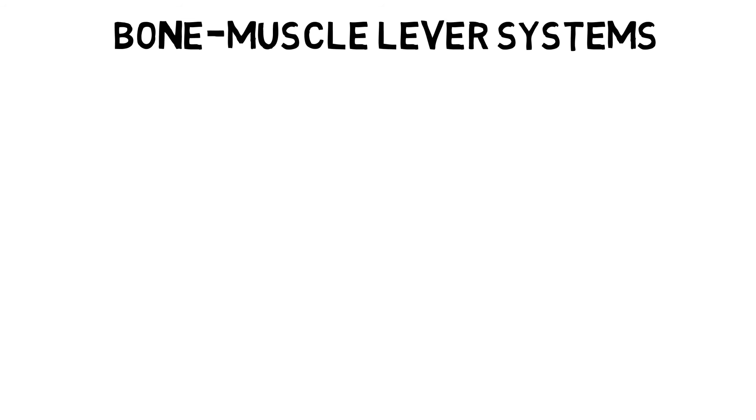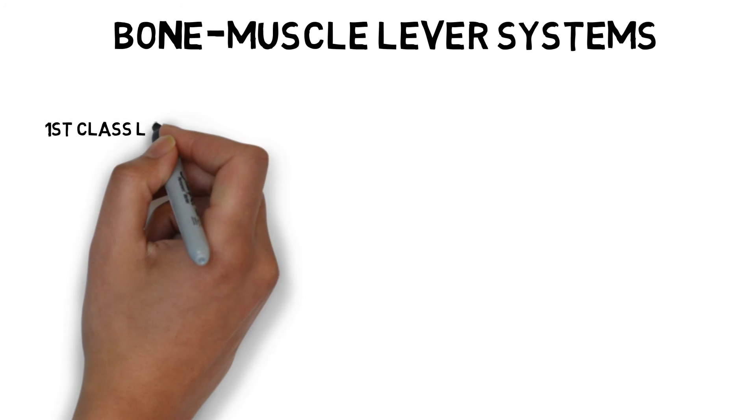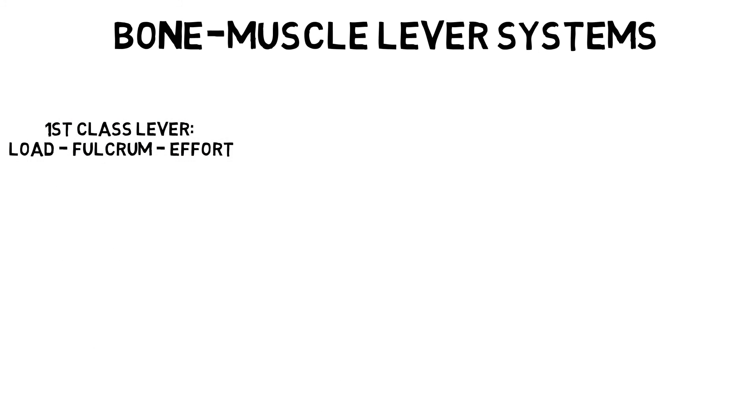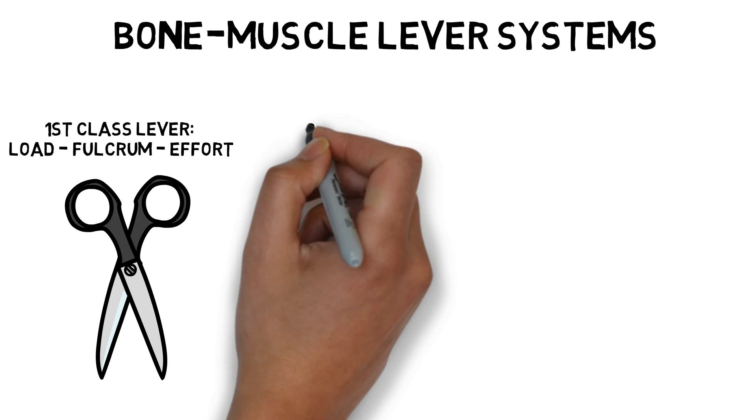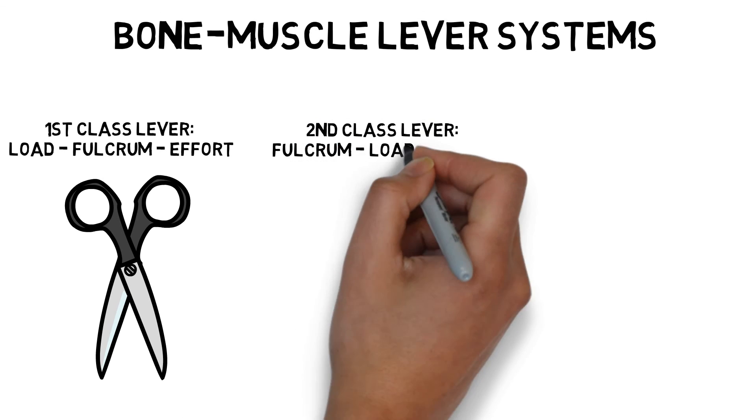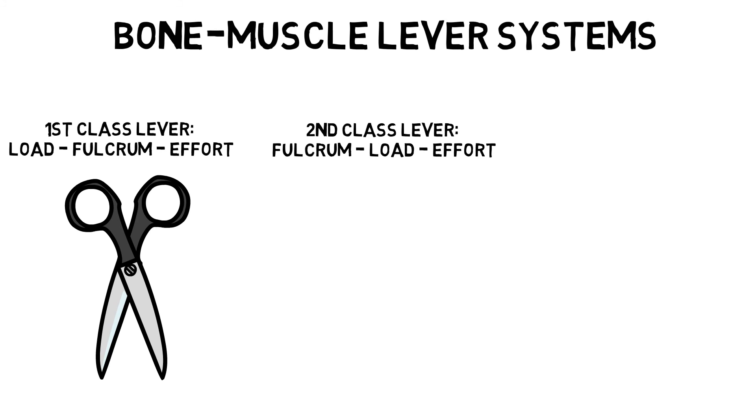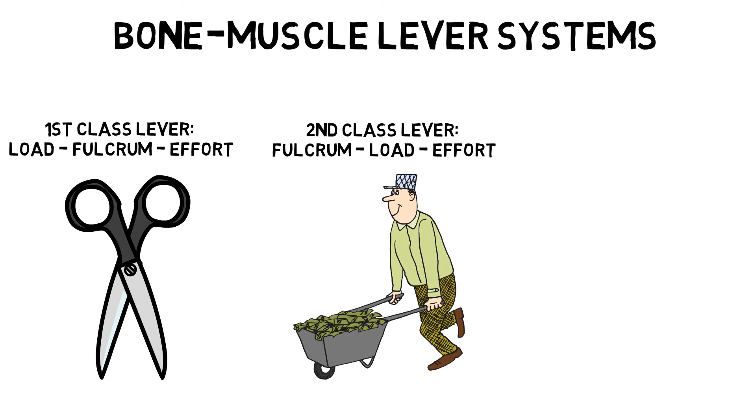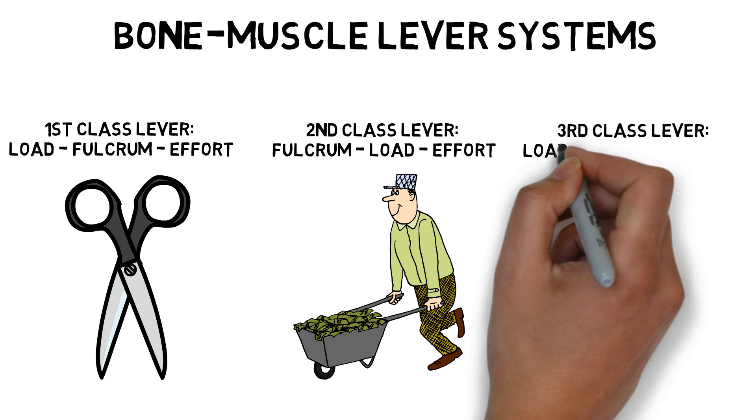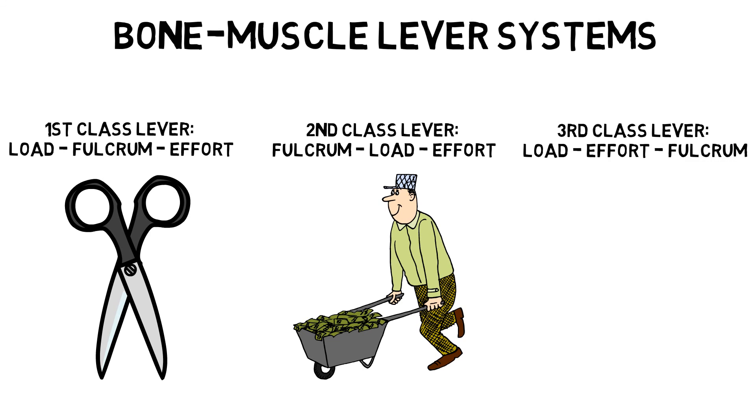A first class lever is load, fulcrum, effort, such as a pair of scissors or lifting your head up from your chest. A second class lever is fulcrum, load, effort, such as a wheelbarrow or standing on tiptoe. And third class levers which are load, effort, fulcrum, such as a pair of tweezers or a bicep curl.